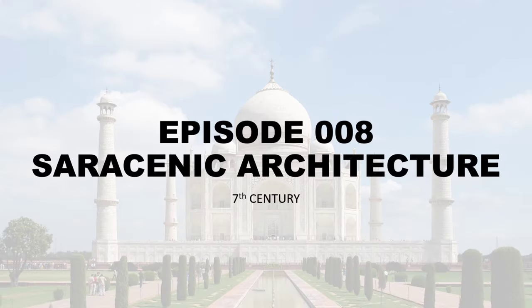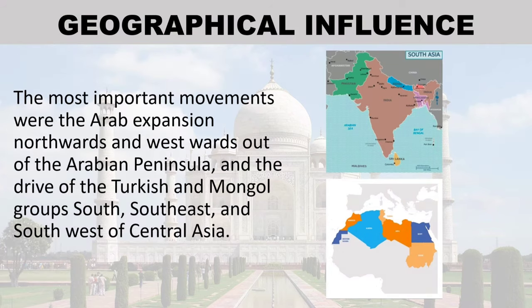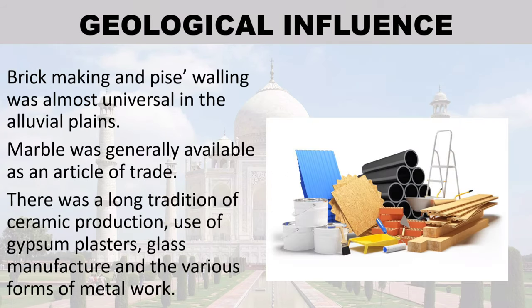Episode 8: Islamic Architecture. From the 7th century, geographical influence — the Muslim faith flourished principally in the countries of southern Asia and North Africa. The spread of Islam has been frequently associated with military conquest, racial movements, and in some cases the consequent displacement of established populations. The most important movements were the Arab expansion northwards and westwards out of the Arabian Peninsula, and the drive of Turkish and Mongol groups south, southeast, and southwest of Central Asia.